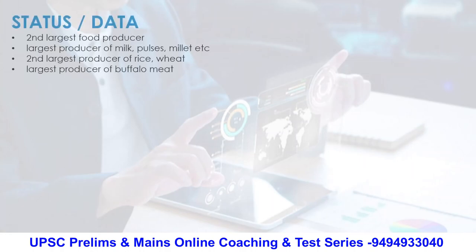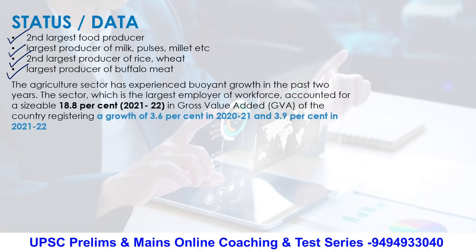Now coming to the data related to agriculture: India is the second largest food producer. It is the largest producer of milk, pulses, and millets. It is the second largest producer of rice and wheat, and the largest producer of buffalo meat as well. These statistics were there in the economic survey and budget of 2021 and 2022. Almost 18.8% of India's total GVA — gross value added — is coming from agriculture.